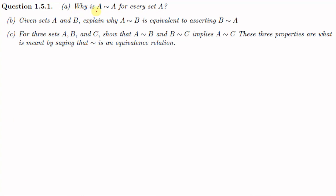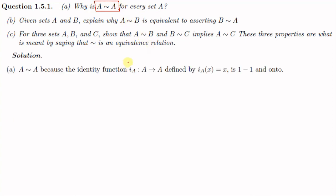The first part is to justify why A is similar to A for each set A. For every set A we have the identity function defined on A, denoted I_A, from A to A, defined by I_A(x) equals x. That means the image of every element under this function is that element itself. We can clearly see that this function is one-to-one and onto as well, and therefore A is similar to A, or A has the same cardinality as A.